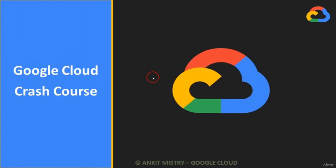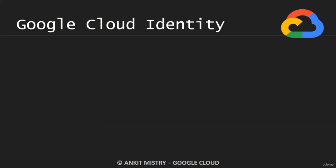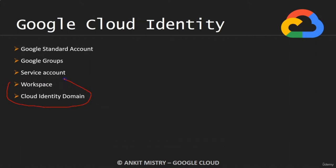Let's discuss about cloud identity, roles, and permissions. Inside Google Cloud, there are five different ways you can interact with it: you can use your standard Google account to create a Google Cloud account, you can use Google Groups, you can use the service account, or you can use the Workspace or a Cloud Identity domain account. The last two are specifically highly related to organization accounts. When you have some kind of domain, you can attach it and all the projects, folders, and resource hierarchy you create will be a part of that organization.